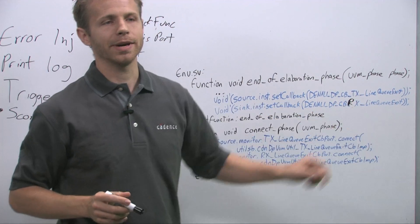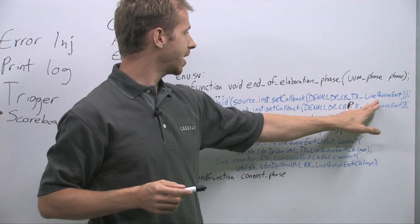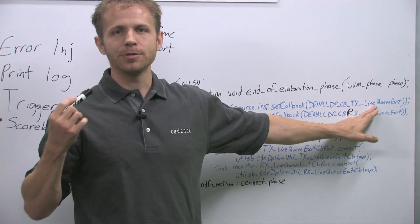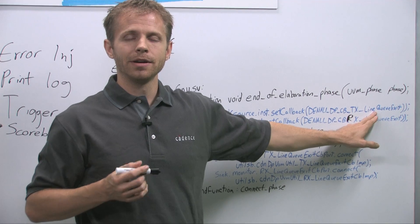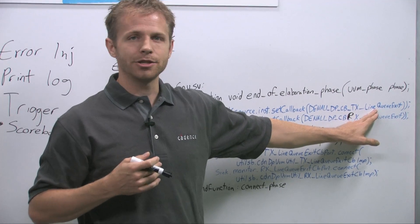So at the TX line queue exit, we're going to be capturing the data. And the nice thing about the TX line queue exit is the data is populated in the RGB fields of the transaction. So we have access to the RGB values instead of just the raw data.